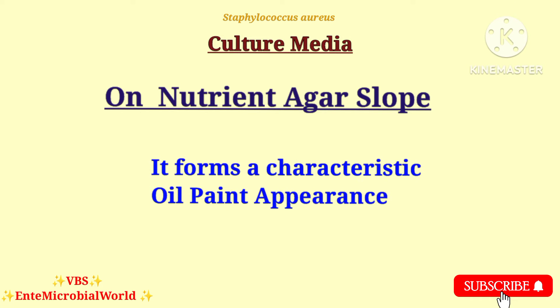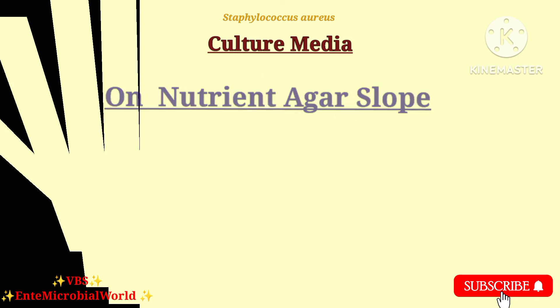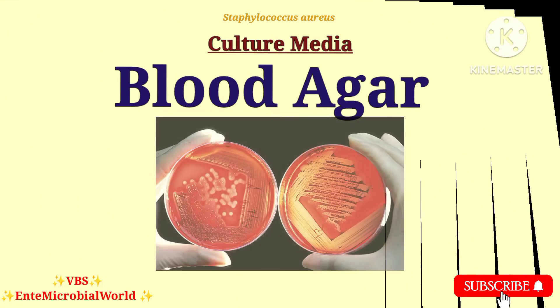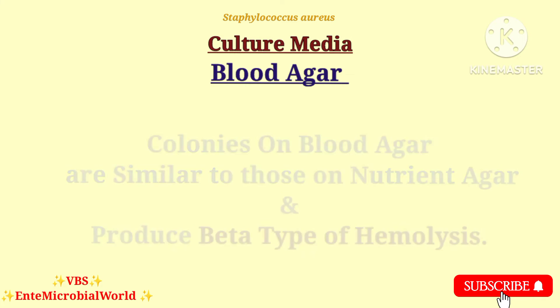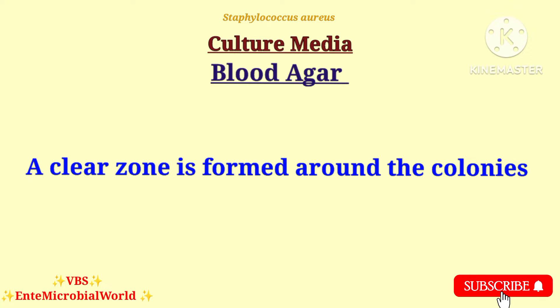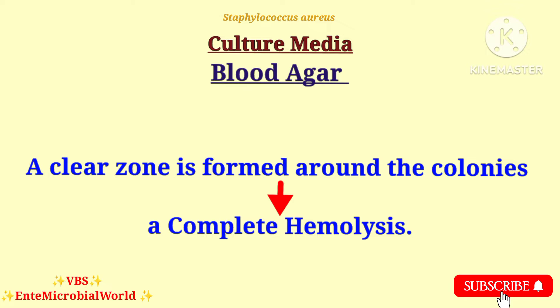On nutrient agar slope it forms a characteristic oil paint appearance. Next one is blood agar. Colonies on blood agar are similar to those on nutrient agar and produce beta type of hemolysis. A clear zone is formed around the colonies, indicating complete hemolysis.